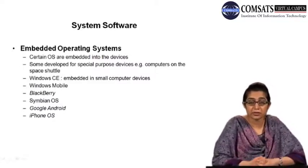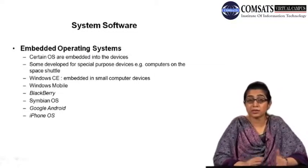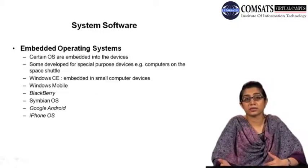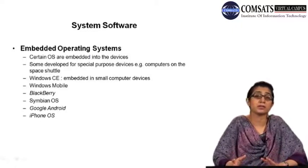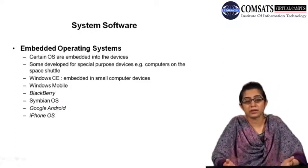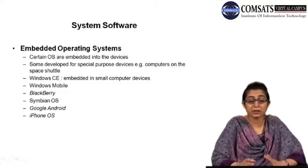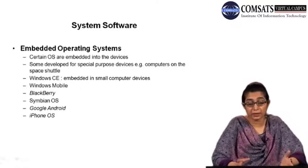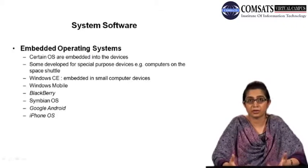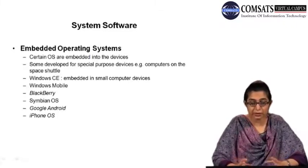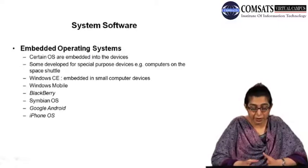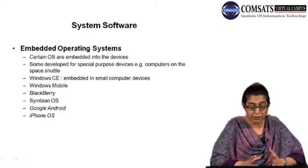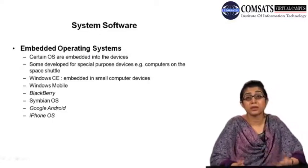Then we have Windows Mobile — again a Windows family operating system used in smartphones and PDAs. It has personal information manager features, for example calendars, calculator, address book, and scheduling — these things are part of personal information management — available along with emailing and internet. Then we have the BlackBerry, Symbian OS, Google Android, and iPhone operating systems. BlackBerry, when it first came, was the kind of operating system being used in smartphones and PDAs.